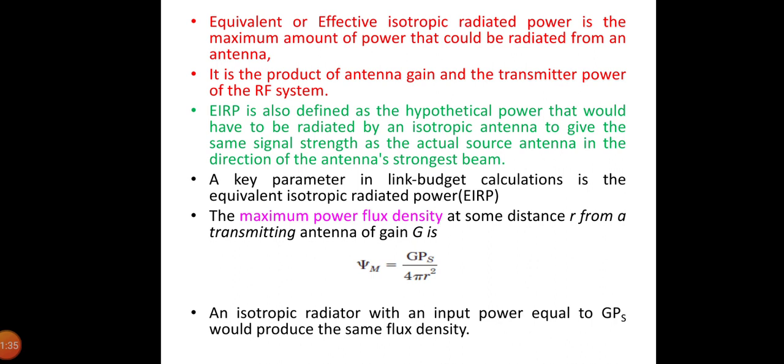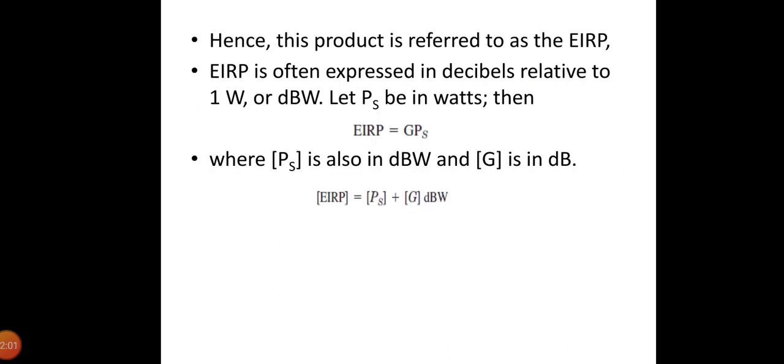It is also the product of the antenna gain and the transmitter power of the RF system. EIRP is also defined as the hypothetical power that would have to be radiated by an isotropic antenna to give the same signal strength as the actual source antenna in the direction of the antenna's strongest beam. An isotropic radiator with an input power equal to GP_s would produce the same flux density. Hence this product is referred to as the EIRP.